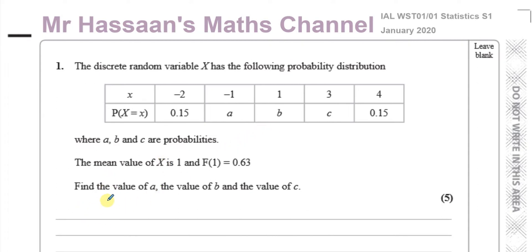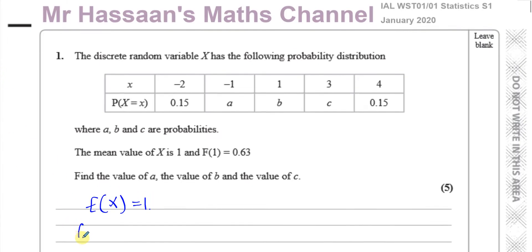The mean value X equals 1, notation is like this: EX is the mean or expected value equals 1. The expected value is found by multiplying the random variable by its probability and then finding the sum of all of those. So the expected value is minus 2 multiplied by 0.15, plus minus 1 times A, plus 1 times B, plus 3 times C, plus 4 times 0.15.